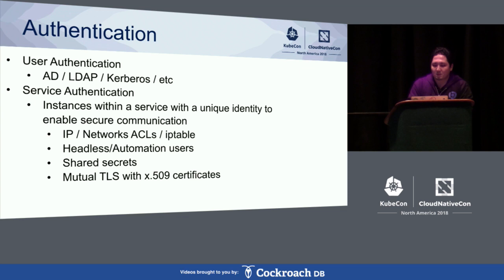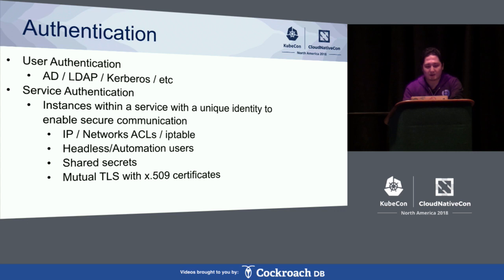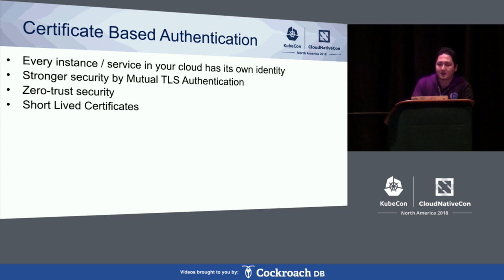For example, by using IP ACLs, the configuration will be more complex as the system scales. By using a headless user account, we have to register and manage each account. Another way to do this is to use shared secrets. However, this approach can be vulnerable to leakage of the secrets themselves, for example in man-in-the-middle attacks. In multi-cloud environments, the most common secure way is to use mutual TLS authentication with X509 certificates. By using certificate-based authentication, every instance or service in your cloud can have their own identities that allows them to communicate to each other securely.